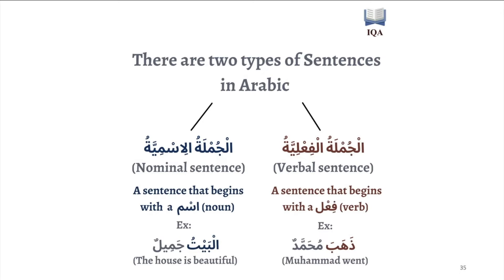The nominal sentence is a sentence that begins with an ism. An ism is a noun. For example, albaytu jamilun. Albaytu is a noun, which means 'the house', and it begins the sentence, so this is a nominal sentence.